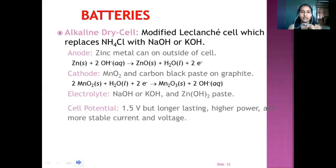Next is alkaline dry cell. It is a modified Leclanche cell which replaces NH4Cl with NaOH or KOH. At anode, zinc metal can is used on outside the cell and Zn solid plus 2OH gives ZnO plus H2O and it releases 2 electrons. At cathode, MnO2 plus carbon black paste on graphite. MnO2 plus H2O plus 2 electrons gives Mn2O3 plus 2OH aqueous. Electrolyte used in this cell is NaOH or KOH and ZnO paste. Cell potential is 1.5 volts but longer lasting, high power and more suitable current and voltage.